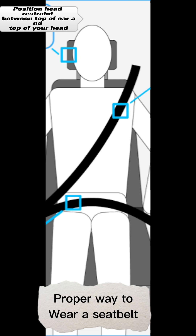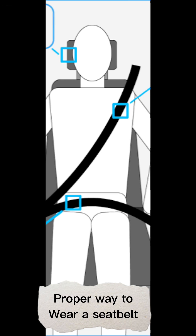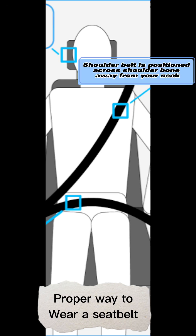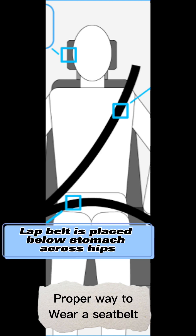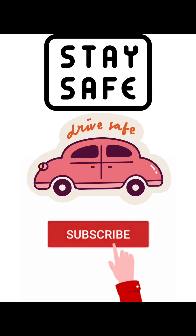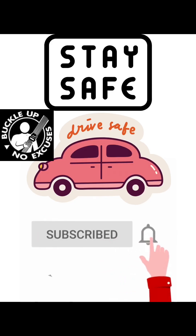Position the head restraint between the top of your ear and the top of your head. The shoulder belt should be positioned across the shoulder bone, away from your neck. The lap belt is placed below the stomach, across the hips. Stay safe, drive safe.